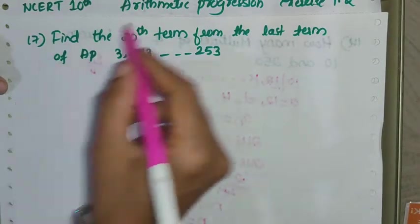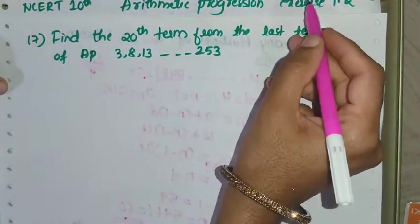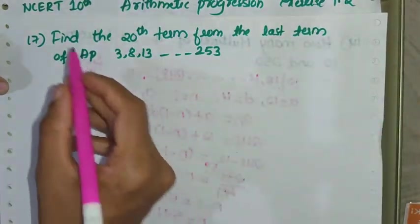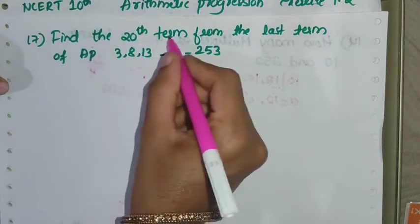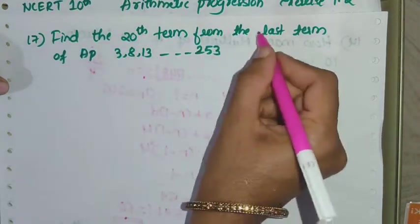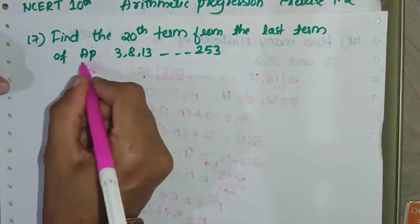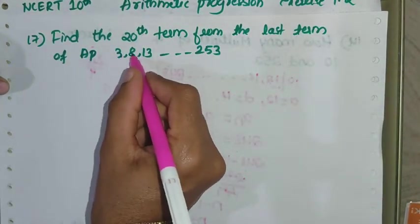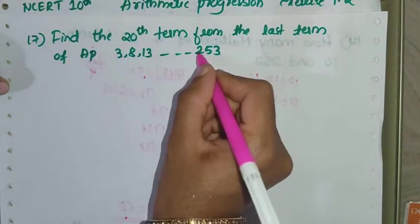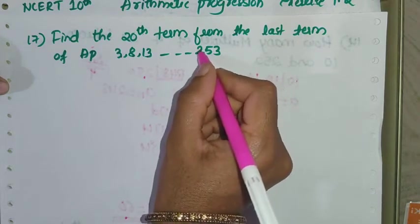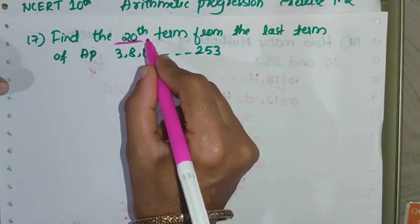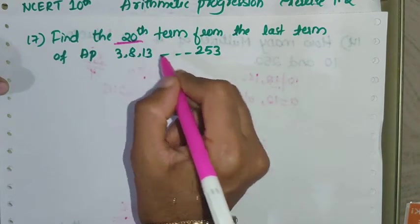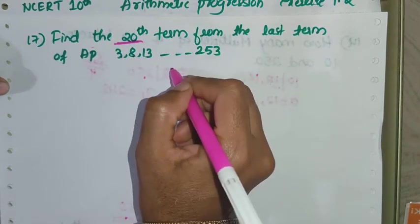17th question of arithmetic progression exercise 1.2. Find the 20th term from the last term of the AP: 3, 8, ...253. We need to find out the 20th term from the last term.